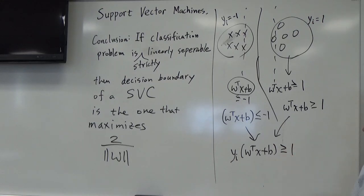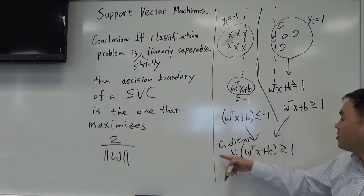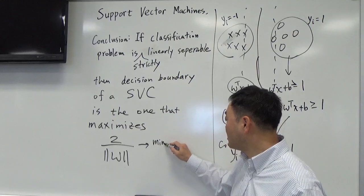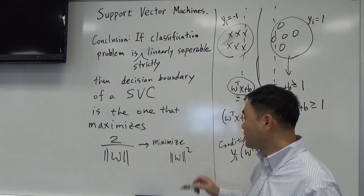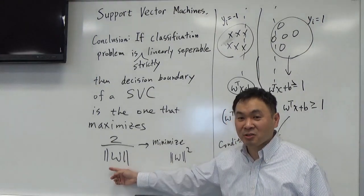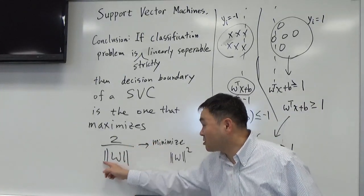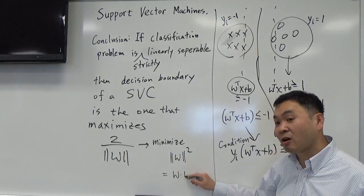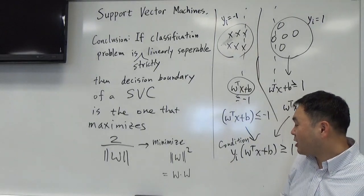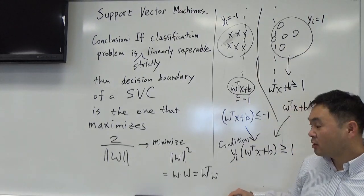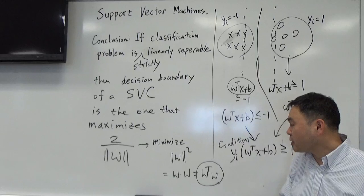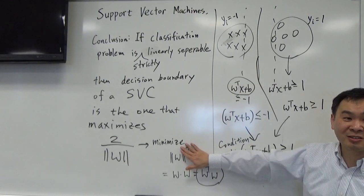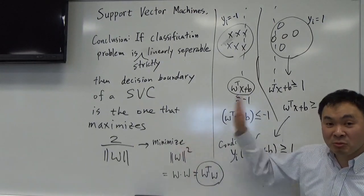So if yi is negative one, WTX plus B will always be less than or equal to negative one on that side, whereas on the other side it will be greater than or equal to one. You can put those two together simply by writing: yi times (WTX plus B) ≥ 1. If yi is 1, that's just this equation; if yi is negative one, divide both sides by negative one and you get the other equation. So this single inequality gives you both conditions.